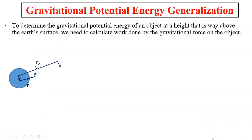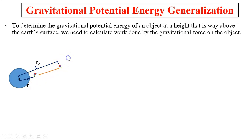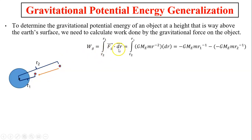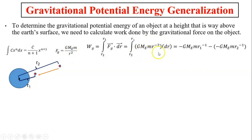Let's take a look at gravitational potential energy generalization. To determine the gravitational potential energy of an object at a height way above Earth's surface, we need to calculate work done by gravitational force on the object. But pay attention — gravitational force is now not constant, so we have to use an integral. Let's suppose the object is moving down toward Earth. The advantage is the displacement and force are in the same direction, so we don't need a negative sign in the dot product. Here is Fg: Fg equals GMem over r squared, which is the same as multiplying r to the negative 2.